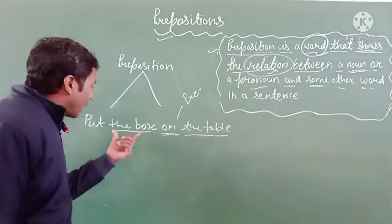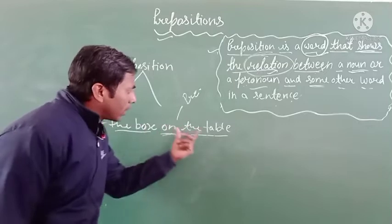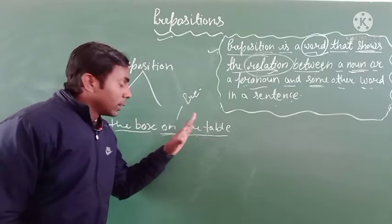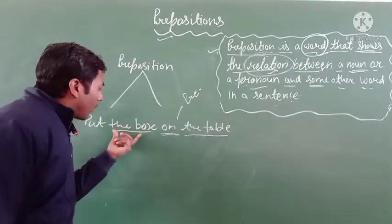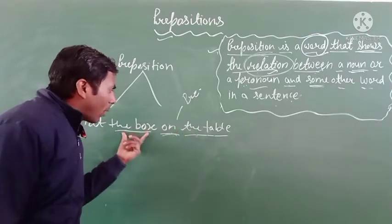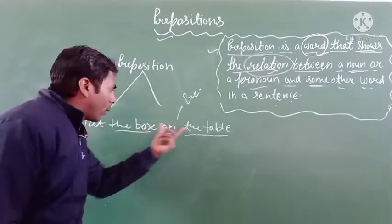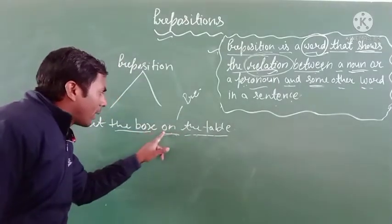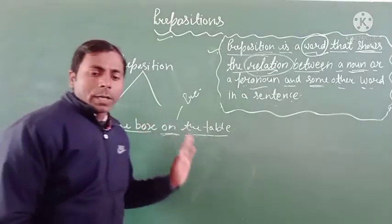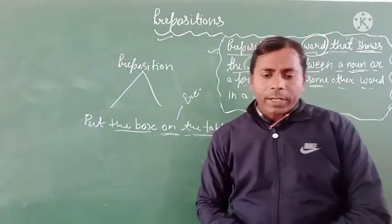Where is the box? The box is on the table. So you can see the relation between box and table. The word 'box' and the word 'table' are both connected to each other by the word 'on'. So the relation between the two nouns — box and table — is shown by the preposition 'on'.